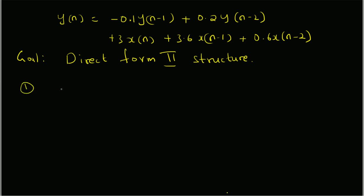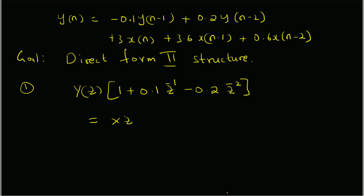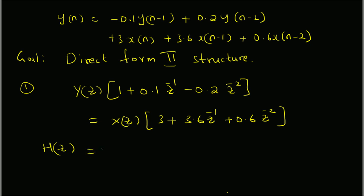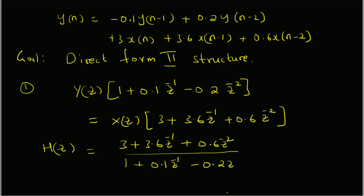The first step is to find the system function. We apply the Z-transform on both sides of the system equation. We get Y(z) multiplied by [1 + 0.1·z⁻¹ - 0.2·z⁻²] equals X(z) multiplied by [3 + 3.6·z⁻¹ + 0.6·z⁻²]. From this, we can write the system function H(z) = Y(z)/X(z) = (3 + 3.6·z⁻¹ + 0.6·z⁻²) / (1 + 0.1·z⁻¹ - 0.2·z⁻²).